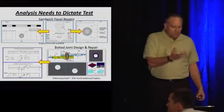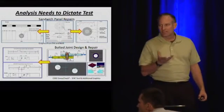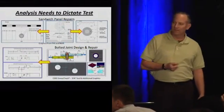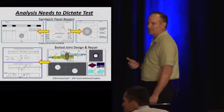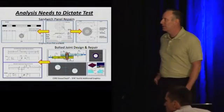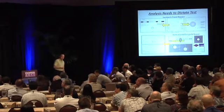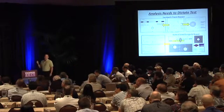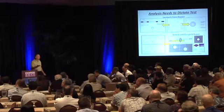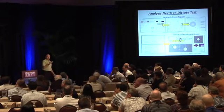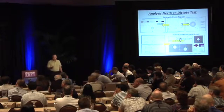The way we do that is we say, well, we need this data of interest, and we conceptualize a test that might give us that information, but we're not sure exactly how it's influenced by other parameters in the design space. So then we'll build an analytical model of that test, and we'll run a design of experiments type of statistical analysis on all the parameters in that test, or in that simulation.